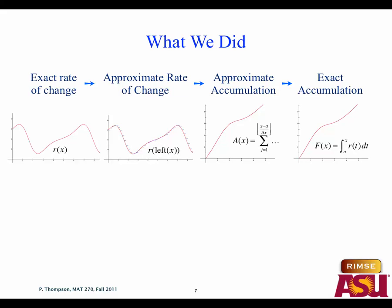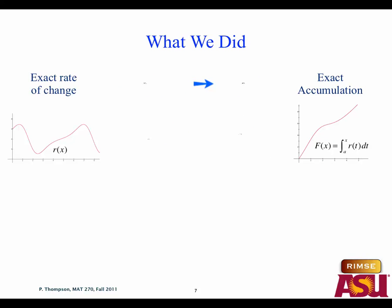So what we did before up to exam two was this process: you know how fast something is changing, you want to know how much of it you have. So we started with the exact rate of change. The process goes from approximate rate to approximate accumulation to exact accumulation — and with that integral function we earn the right to have this fast track of exact accumulation from exact rate of change. That was our integral function.